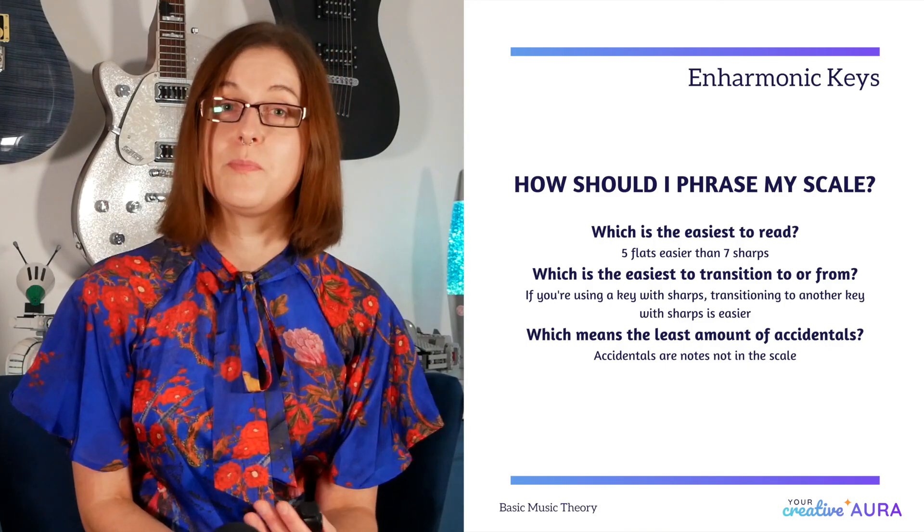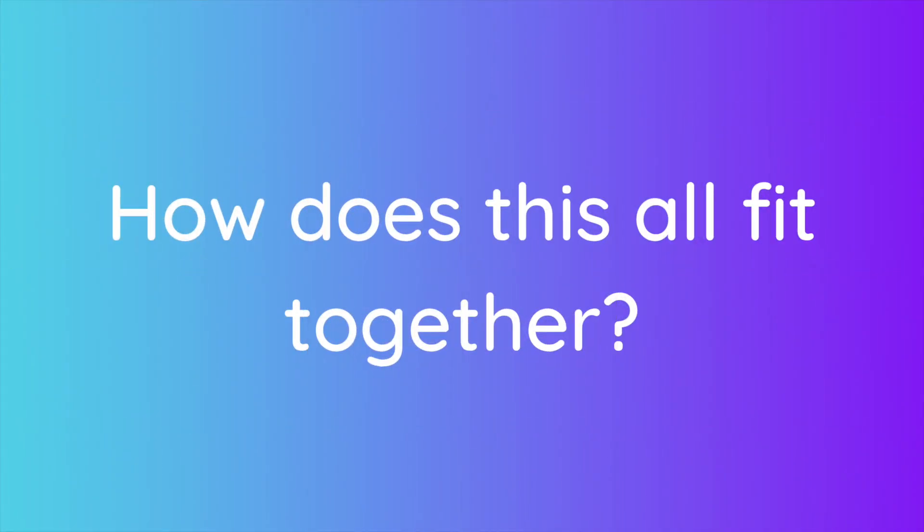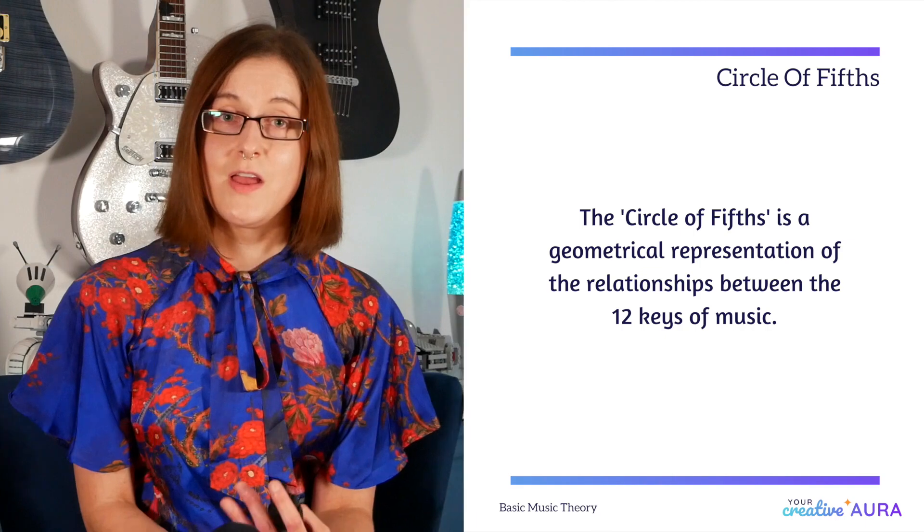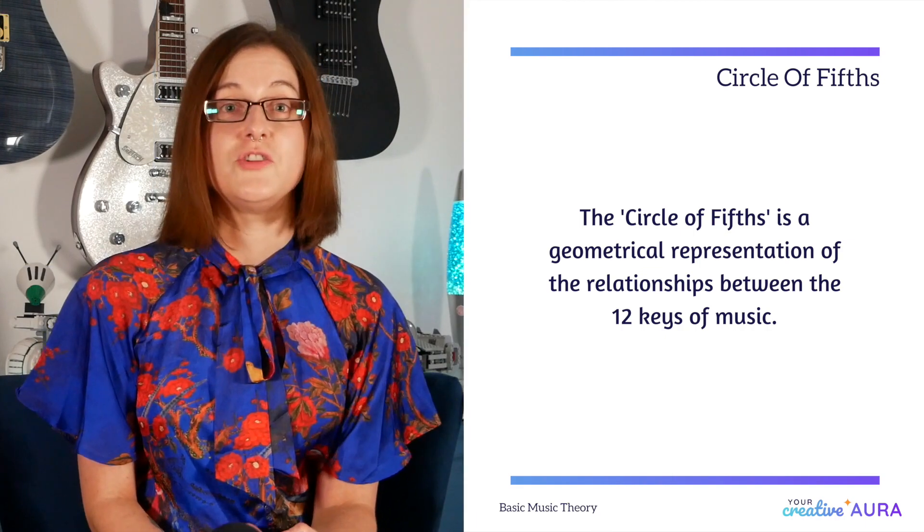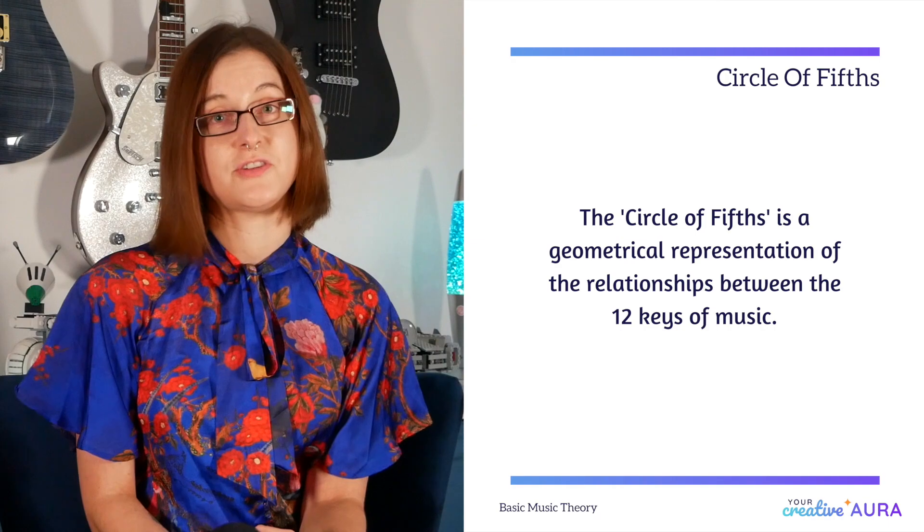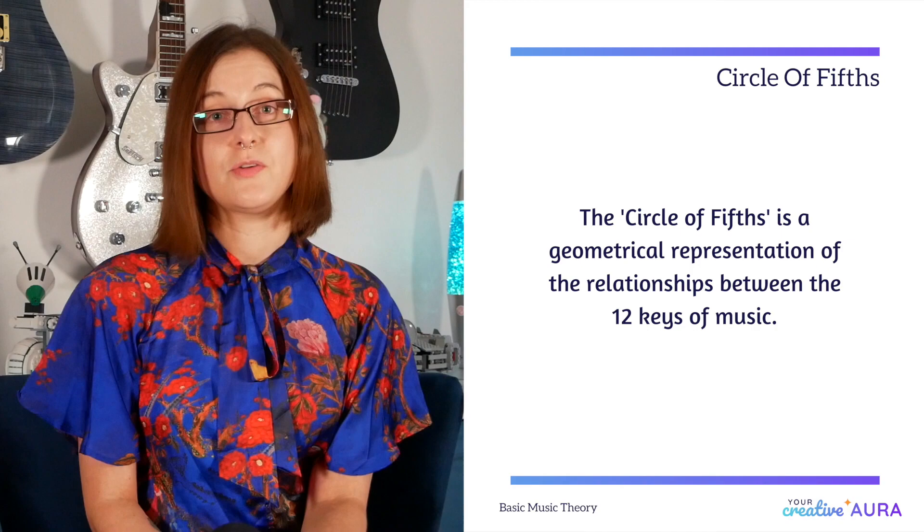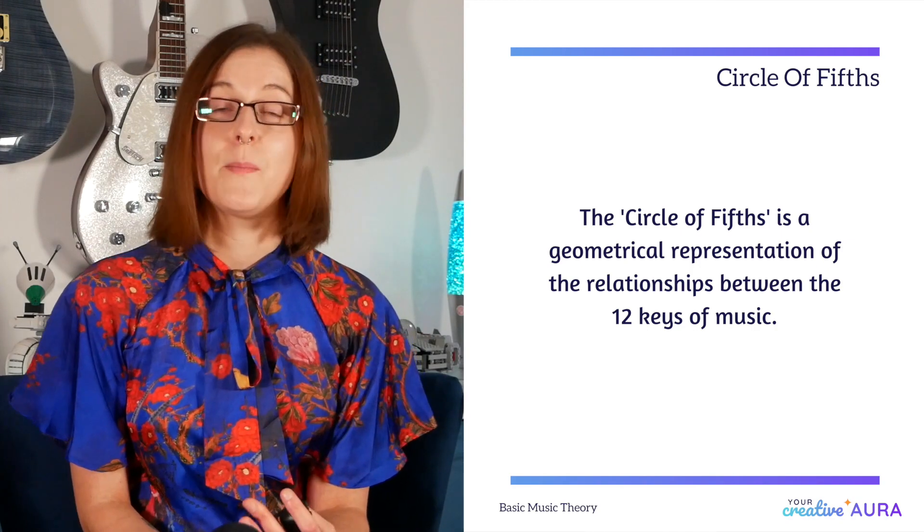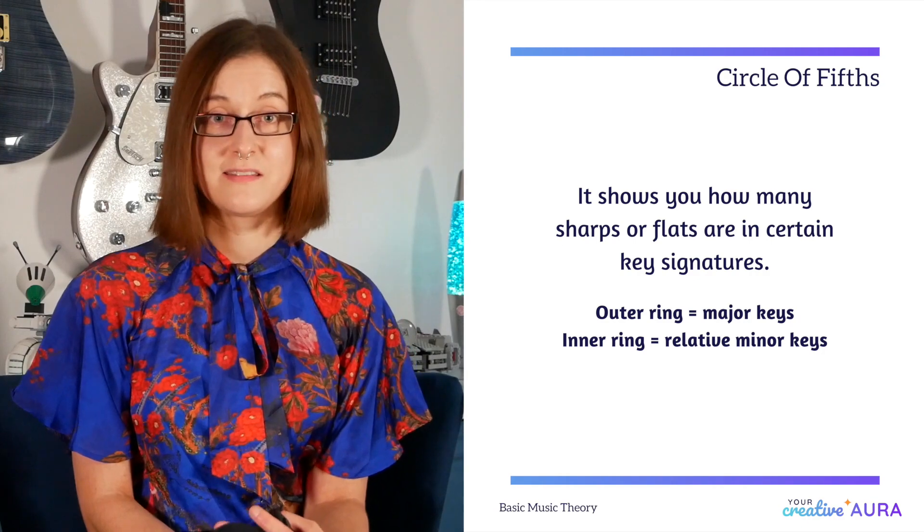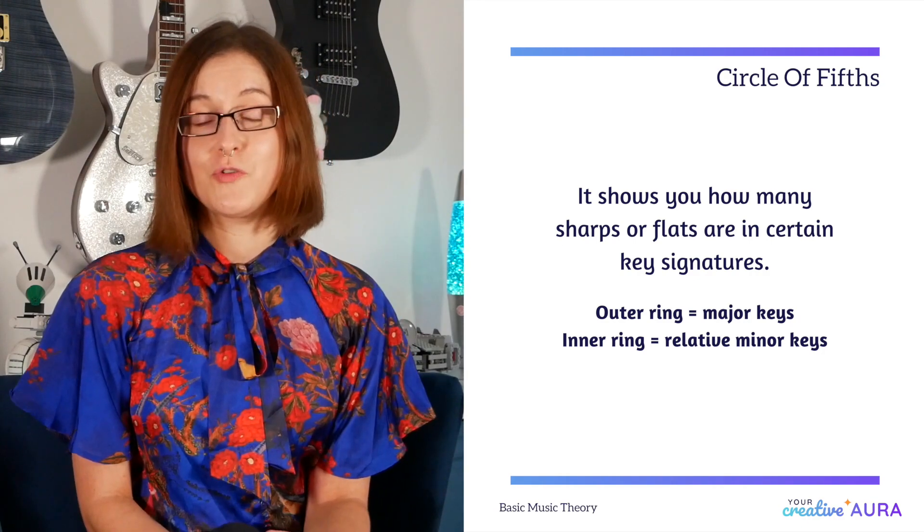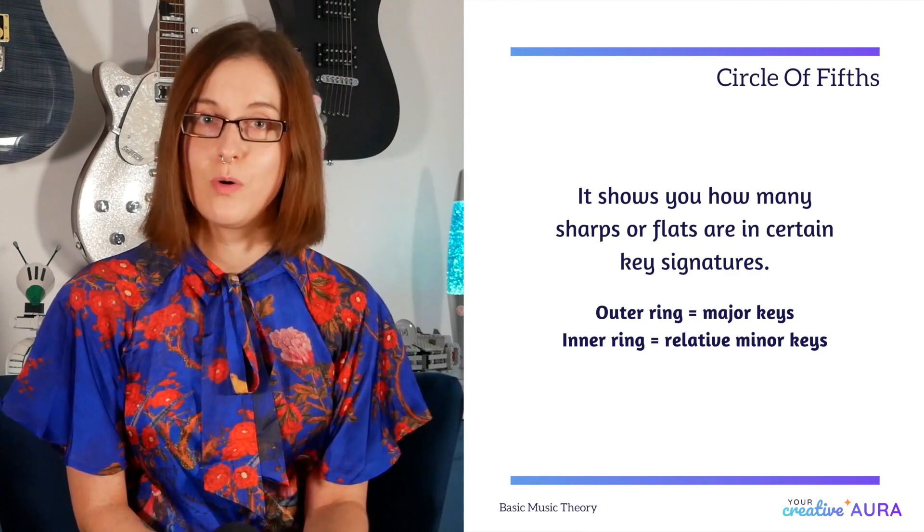So how do key signatures, parallel, relative and enharmonic keys all fit in together? There's so much to remember, and this is where the circle of fifths comes in. The circle of fifths is a geometrical representation of the relationships between the 12 keys of music. It's a handy tool to help you remember relative keys and how many sharps or flats are in certain key signatures. It's also a really handy thing to print off and pin to your wall as well.